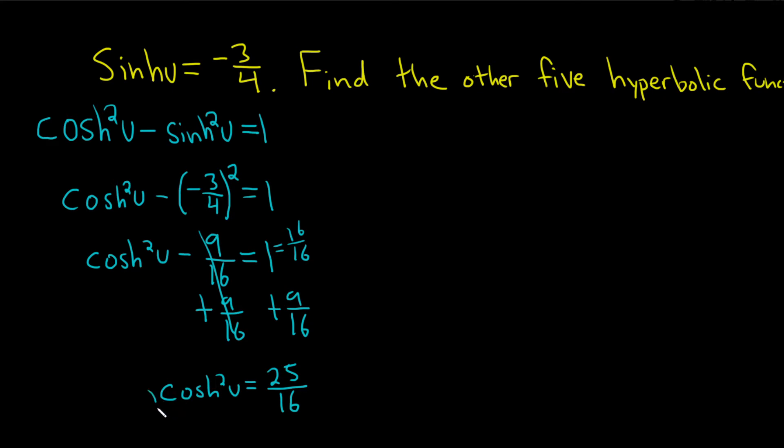So we have cosh²(u). We want cosh(u). So if you take the square root of both sides, you end up getting cosh(u) equals plus or minus, and then you take the square root of 25, that's 5, and the square root of 16 is 4. Now the thing is, cosh(u) is only positive. The graph of cosh(u), only positive numbers. So it can't be negative.